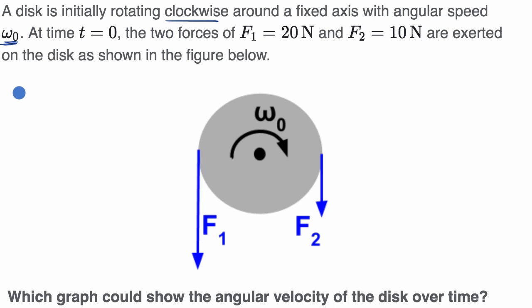All right, so in our vertical axis here, let's put our angular velocity. And in our horizontal axis here, we want to see how that changes over time.